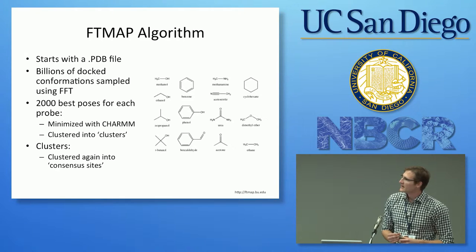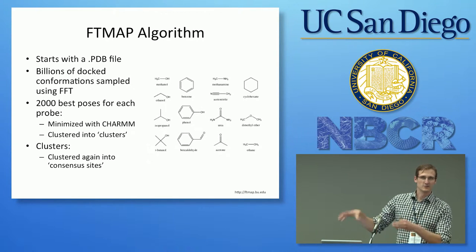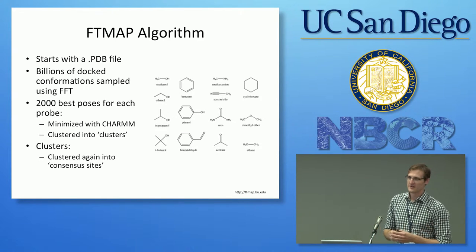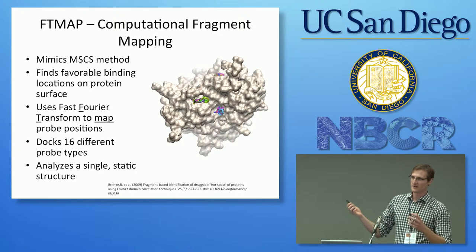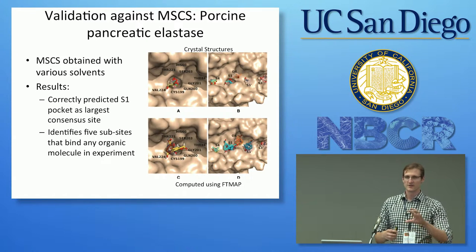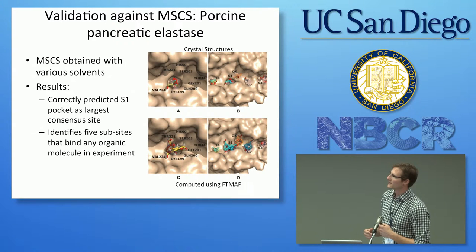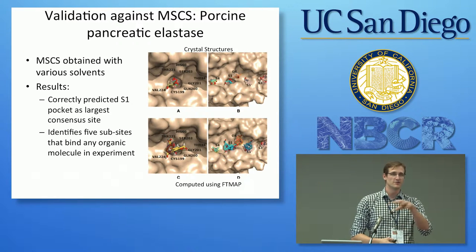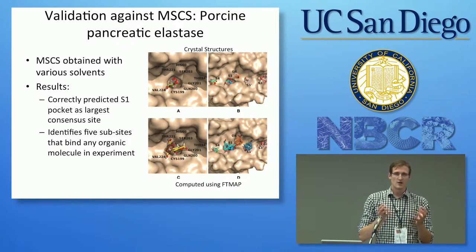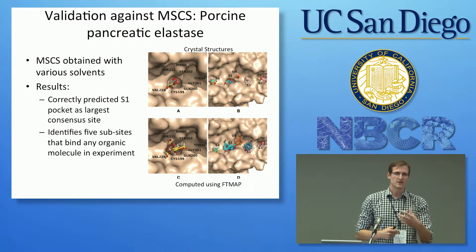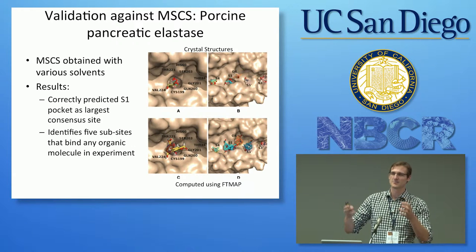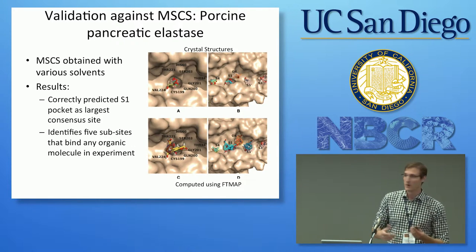FTMAP only considers one structure at a time, but of course proteins aren't static — they're constantly changing, breathing, moving, twisting. They also don't just move on the millisecond scale; they also mutate across different organisms. You might want to compare how the hot spots differ between different mutants of the biomolecule.